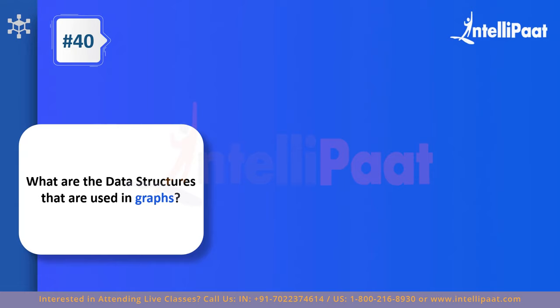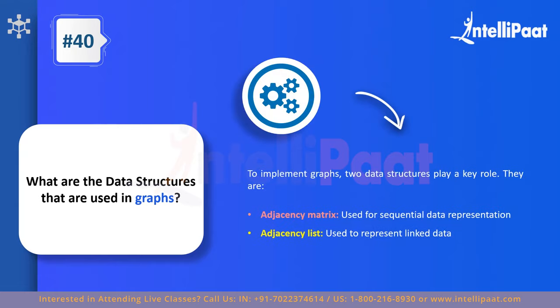Question forty: what are the data structures used to implement graphs? To implement a graph data structure, you need two key structures: an adjacency matrix and an adjacency list. The adjacency list represents the data going in and is used for linear linked data representation. The adjacency matrix shows sequential data representation, indicating how data is stored sequentially. When asked how graphs are implemented, make sure to mention both adjacency matrix and adjacency list.